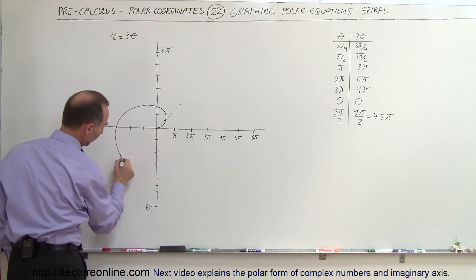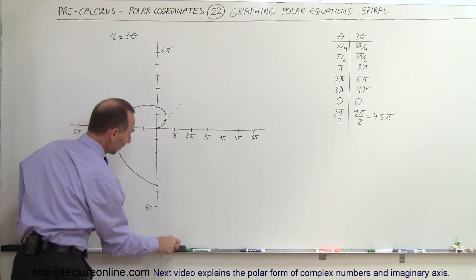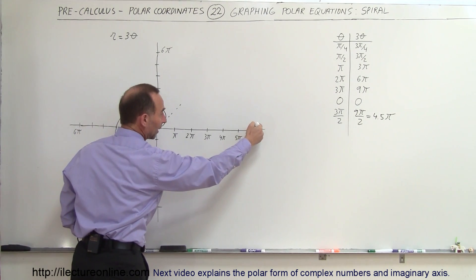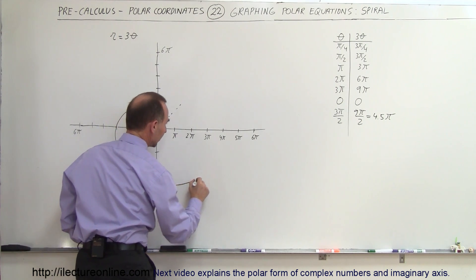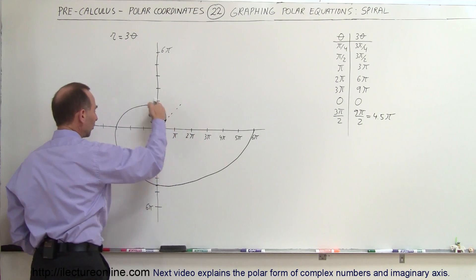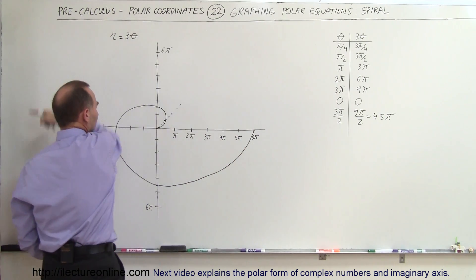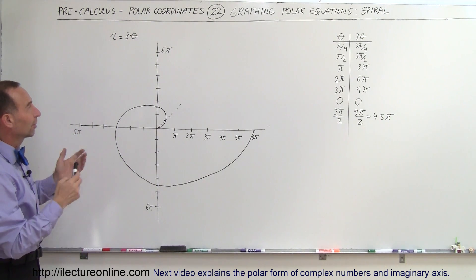You can see that the spiral will just continue to increase like this. I got a little bit too far right here. And then finally, if we then go over to 2π, 3 times 2π is 6π. So when the angle is 2π, then you can see that r will be equal to 6π. So you can see that the spiral just continues to get bigger as we go around, and that's a very peculiar graph for polar coordinates.